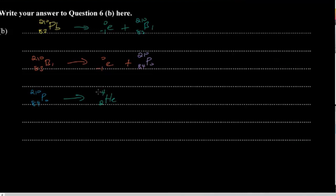So polonium-210 (atomic number 84) emits an alpha particle and forms lead-206 (atomic number 82), because the mass goes down by 4 and the atomic number goes down by 2. We start with unstable lead-210, undergo two beta decays followed by one alpha decay, to form stable lead-206.